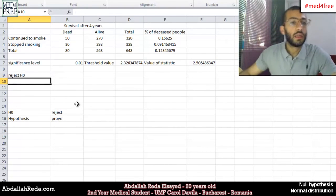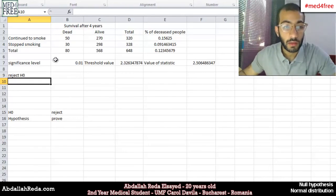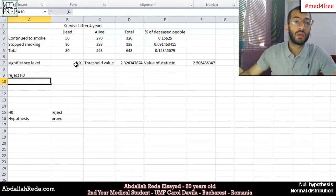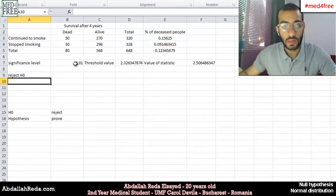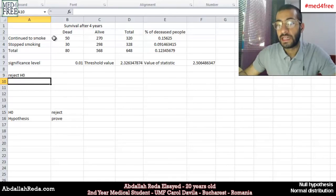And we click enter. And it says reject the null hypothesis. This means that we can use that very specific significance level to prove that more people who continued smoking died compared to people who stopped smoking.